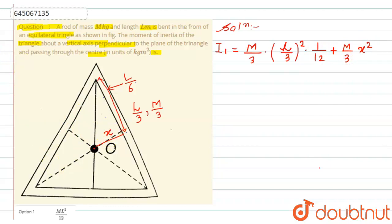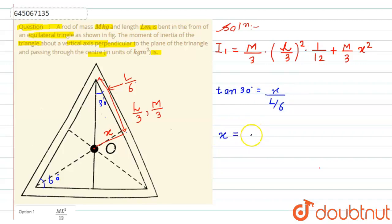In an equilateral triangle the interior angle is 60°, so the half-angle at the center is 30°. Using trigonometry: tan(30°) = x / (L/6). Therefore x = tan(30°) × (L/6) = (1/√3) × (L/6) = L/(6√3).